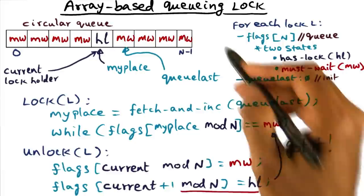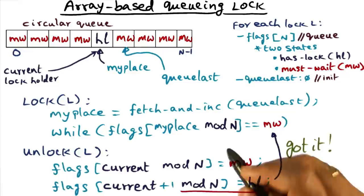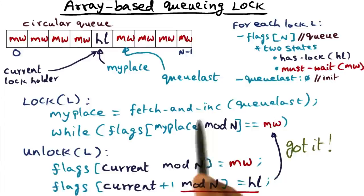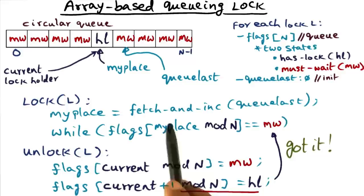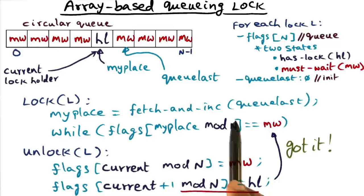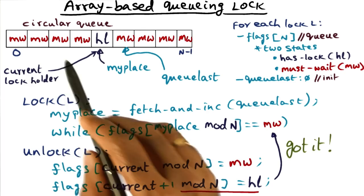Now that we understand how the lock and the unlock algorithm works with this array-based queuing, let's talk about some of the virtues of this algorithm. The first thing that you notice is that there's exactly one atomic operation that you have to carry out per critical section. So every time you want to acquire a lock, you come in and do a fetch and increment, and that is all that you do in order to get the lock. So there's one atomic operation that you do per critical section. That's good news.